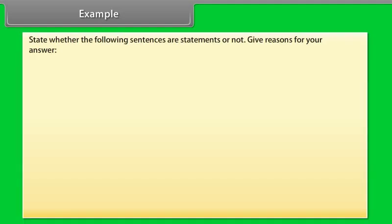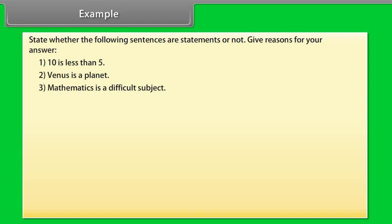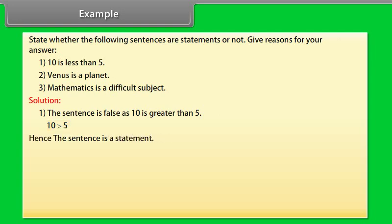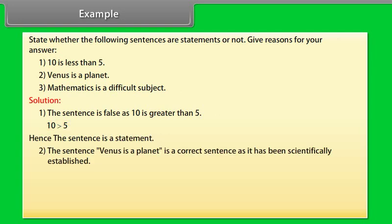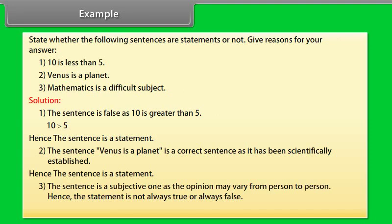Example — state whether the following sentences are statements or not, and give reasons: (1) '10 is less than 5' — this is false, as 10 is greater than 5; hence it is a statement. (2) 'Venus is a planet' — scientifically established as correct; hence it is a statement. (3) 'Mathematics is a difficult subject' — this is subjective; opinion varies from person to person, so it is not always true or false. Hence it is not a statement.